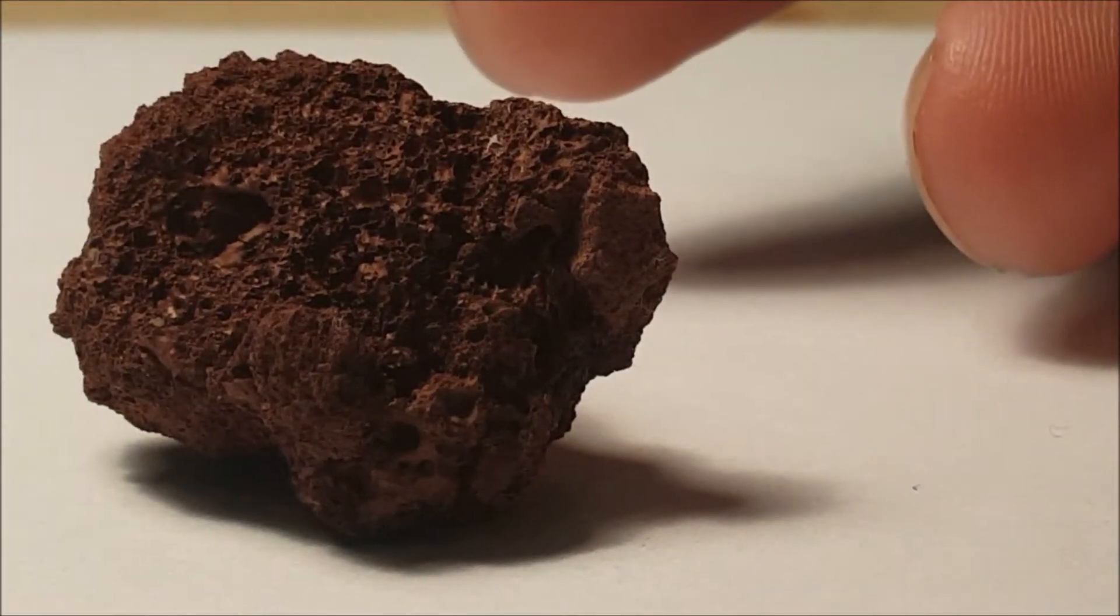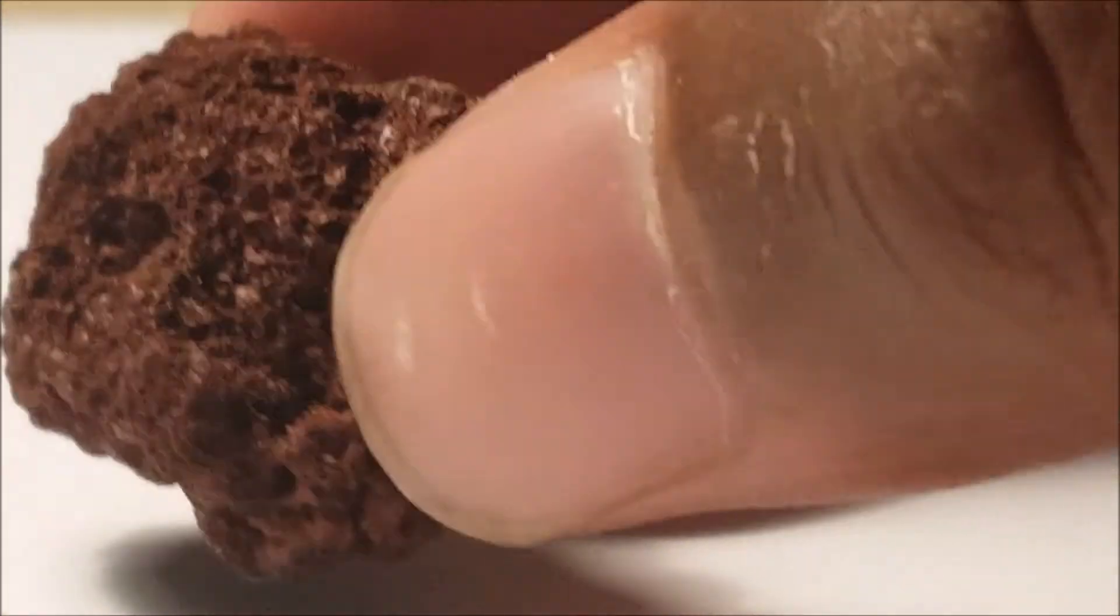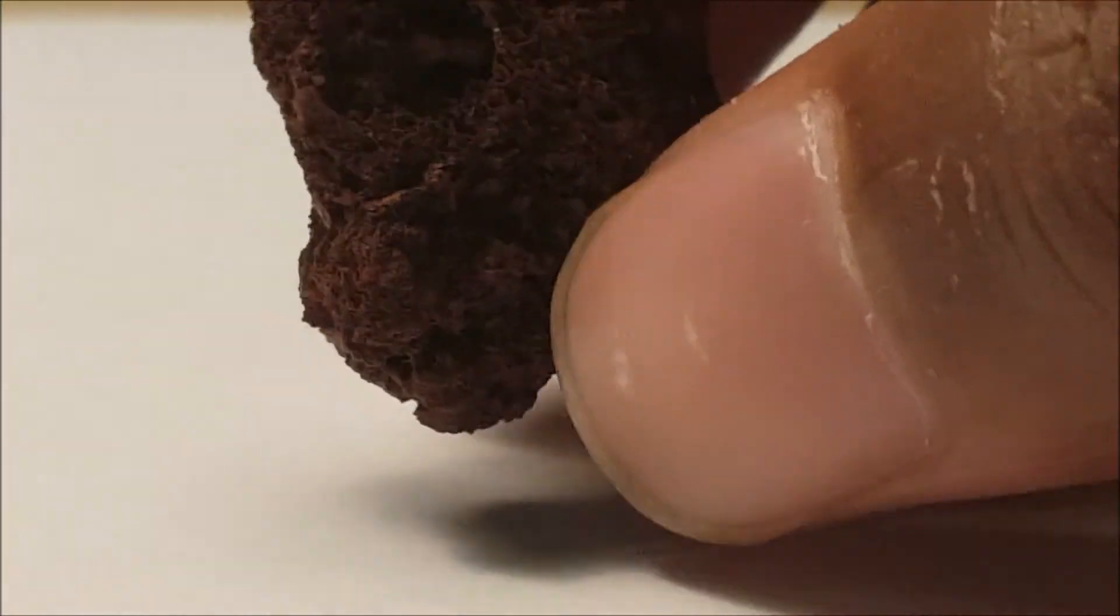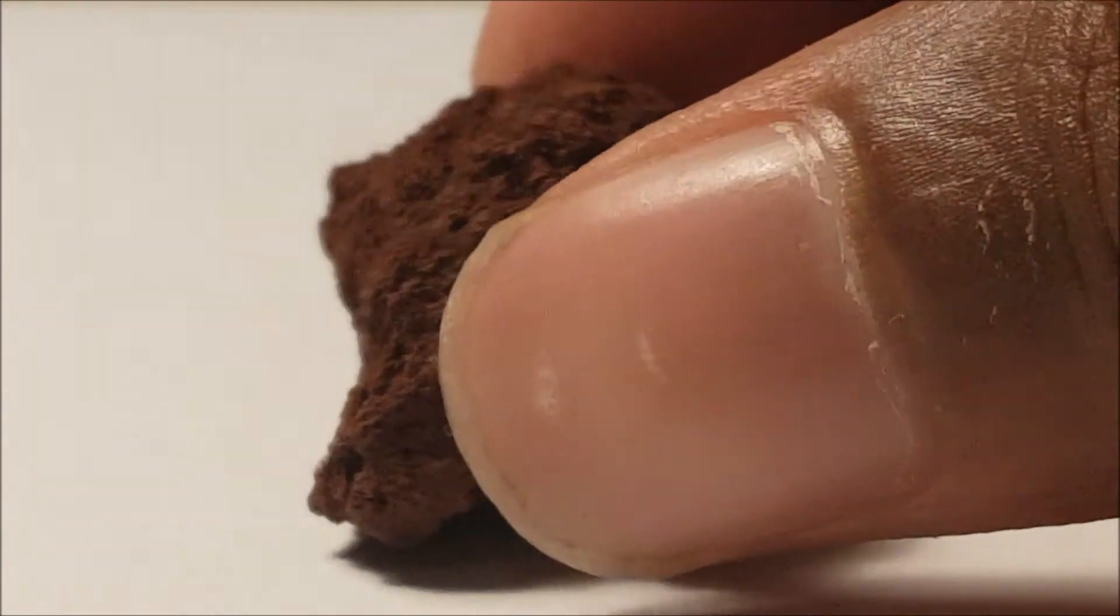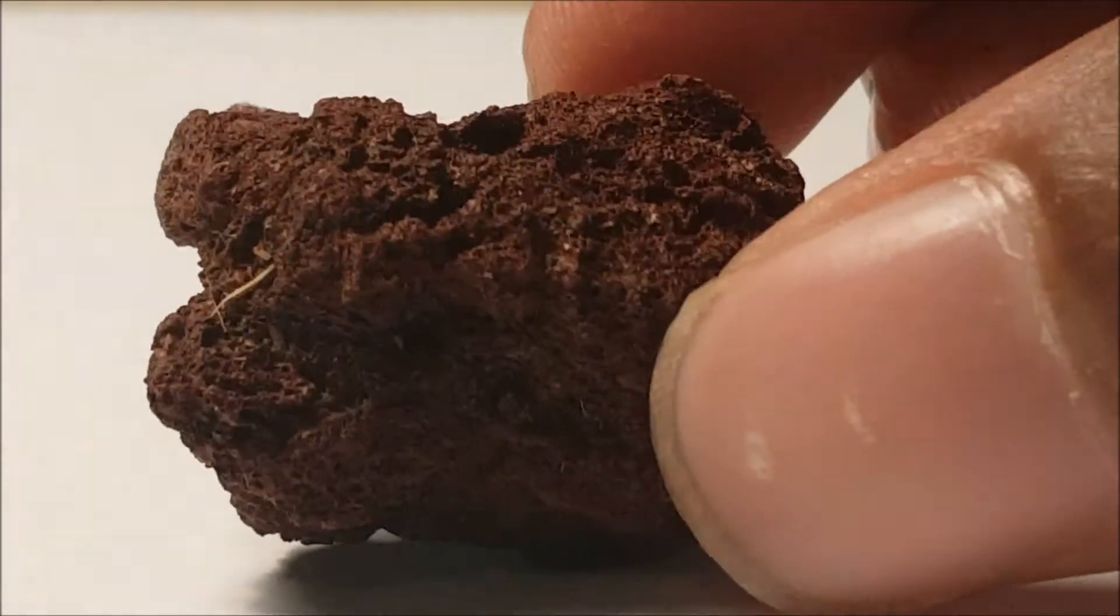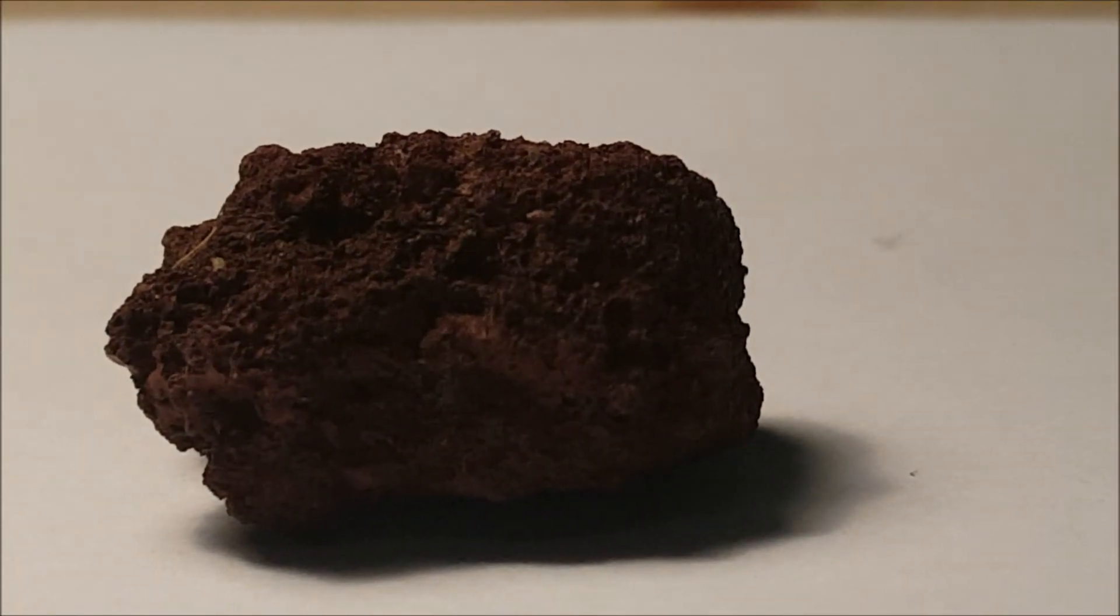Gases are released as it cools, leaving these air pockets here known as vesicles. That is why scoria looks the way it is. That is why it has the very porous appearance, and it's the same reason that pumice has the porous appearance.